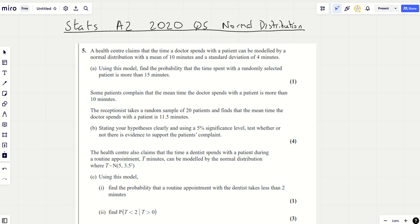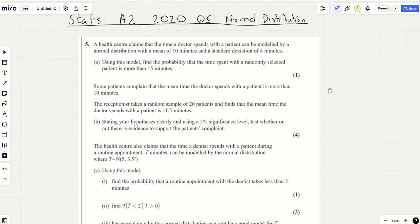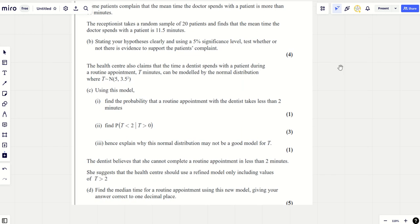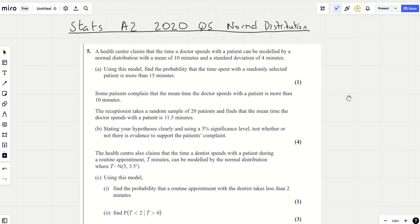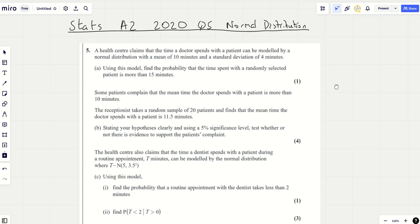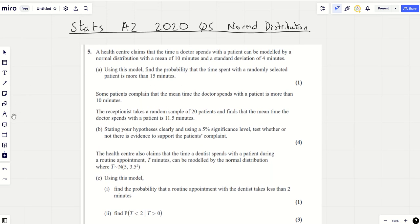Hello and welcome to another video, this time on question 5, normal distribution from the Stats 2020 paper. Now this question is hard, particularly the bit at the end, which I think is very tricky. But still, like on any normal distribution question, there's lots of marks there which aren't too bad, which are easier to get. So let's have a look.